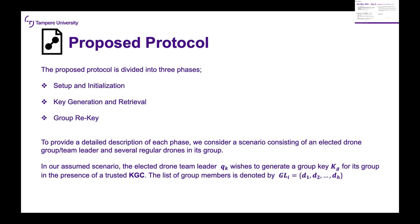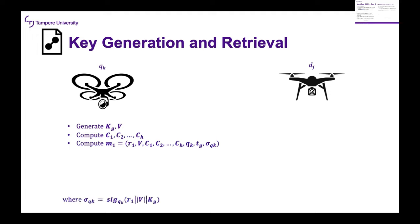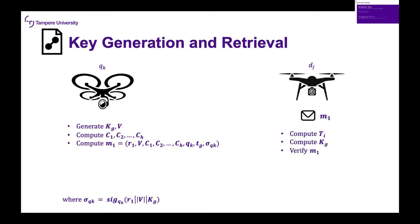We use a simple protocol to show the applicability of our scheme. A team leader wishes to generate a group key for his group in the presence of a trusted KDC, with the group member list GL = {D1, D2, ..., Dn}. The team leader generates the key and V, computes the ciphertext, computes a message — which is basically a random number, V, ciphertext, and the public parameters — and then signs the random number, V, and the key to ensure message freshness. He sends the message to the edge drone, which computes TI, computes the group key KG, and verifies M1. If M1 verifies correctly, the scheme continues; if not, the scheme is aborted.